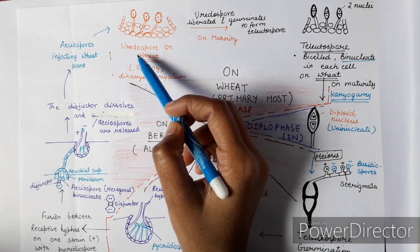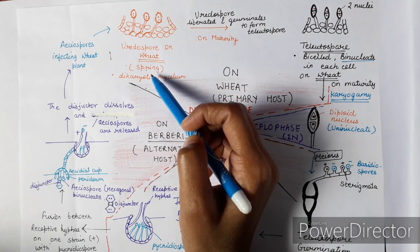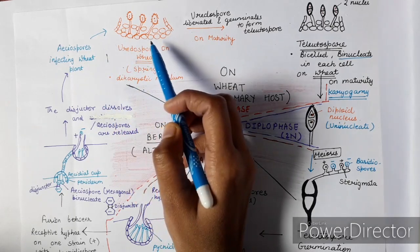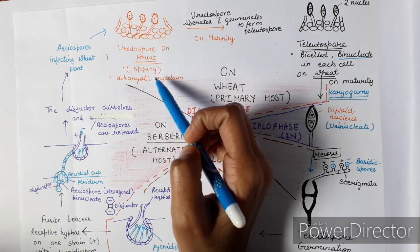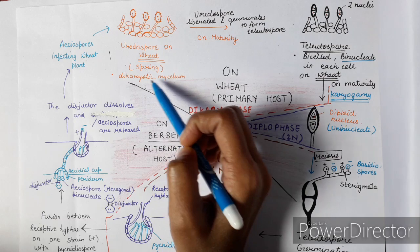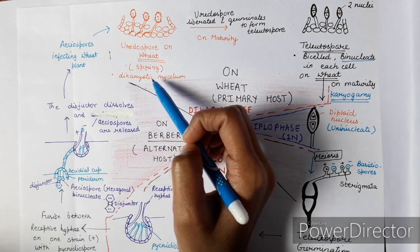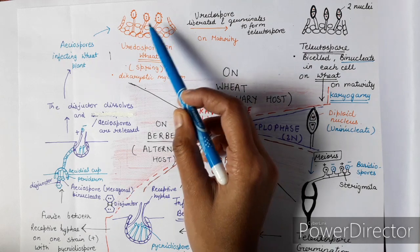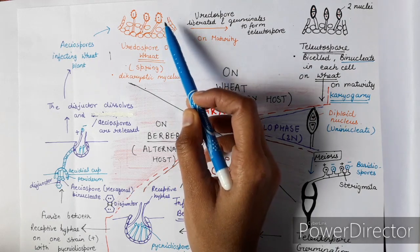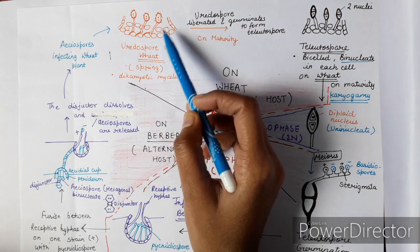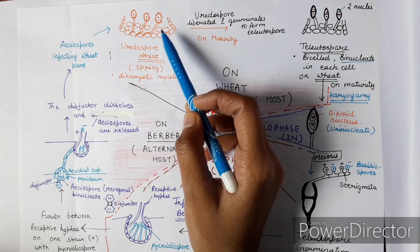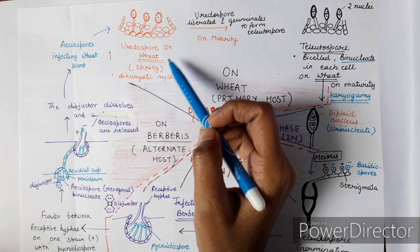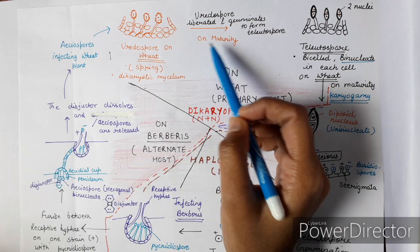The uredospores germinate on wheat in the spring season. The aeciospores infect the wheat plant and give rise to uredospores, forming a dikaryotic mycelium. The uredospore infecting the wheat plant creates pressure on the wheat epidermis, causing it to rupture. A small powdery brown-colored structure comes out from the infected leaf or stem, and the infected wheat plant shows brown streaks or a powdery appearance.